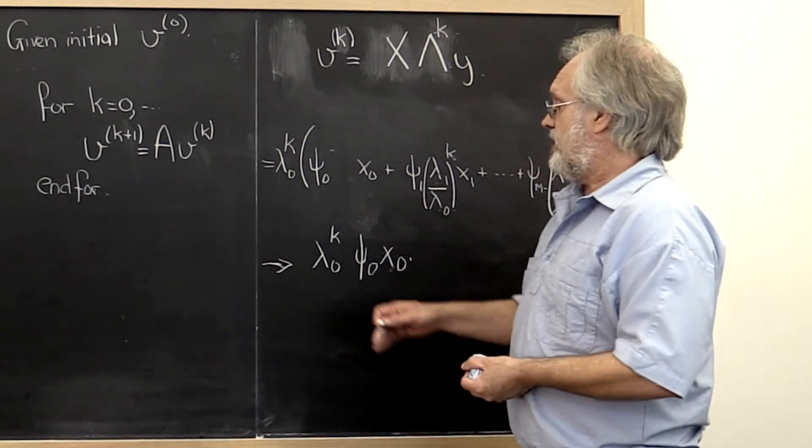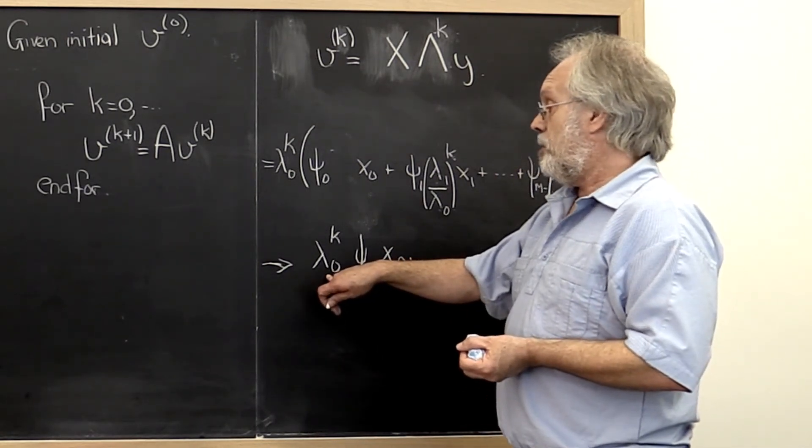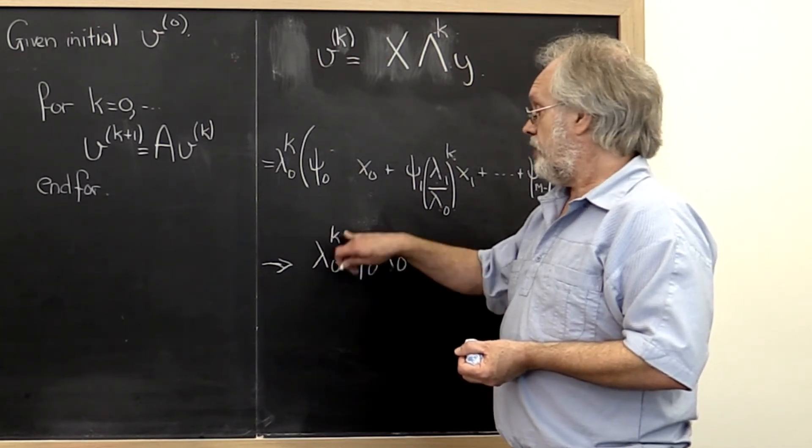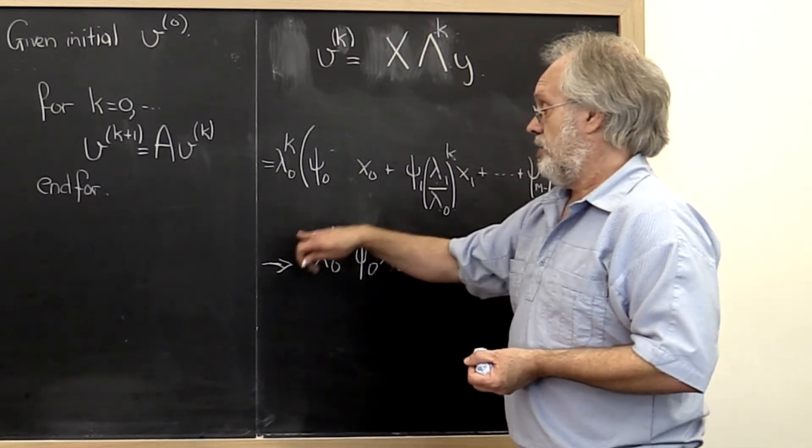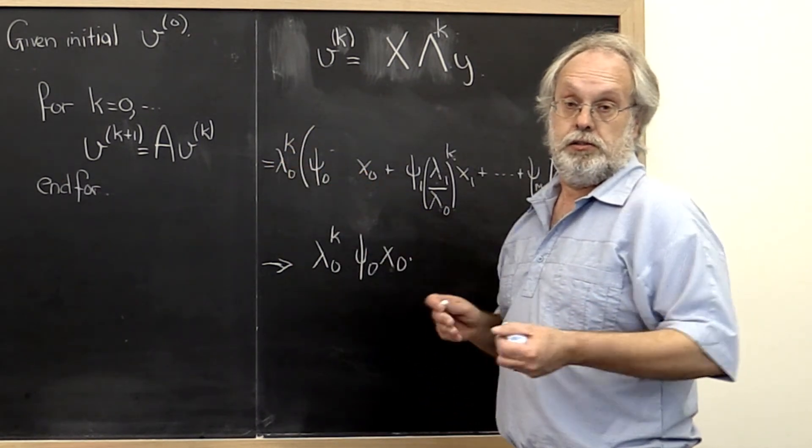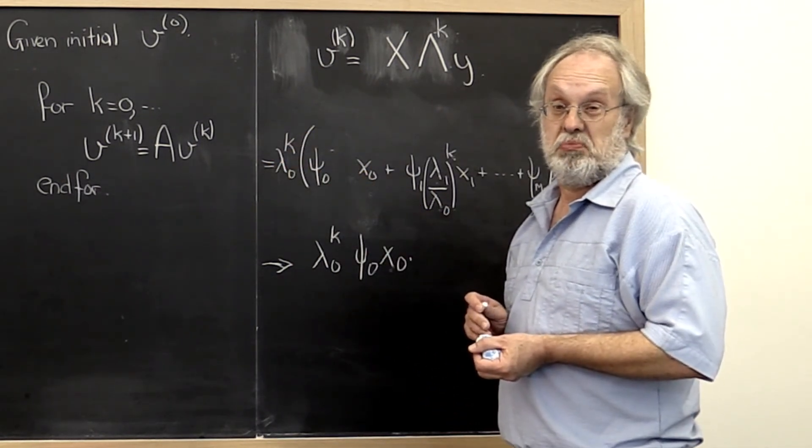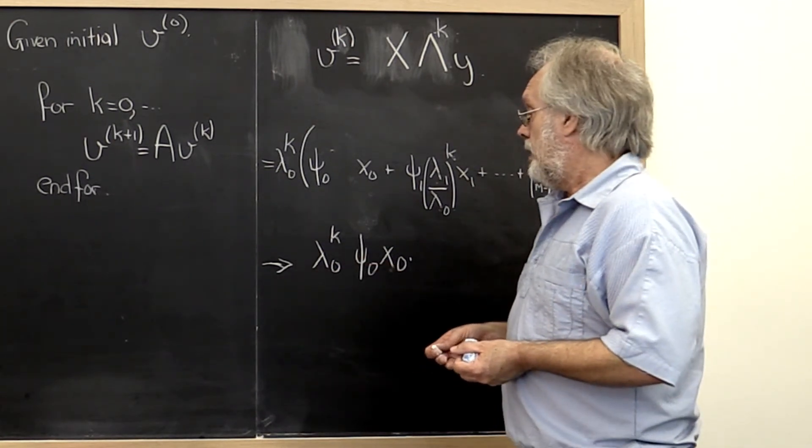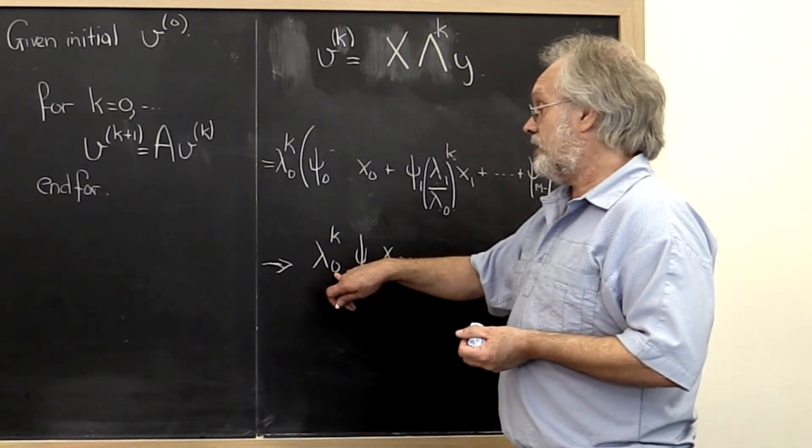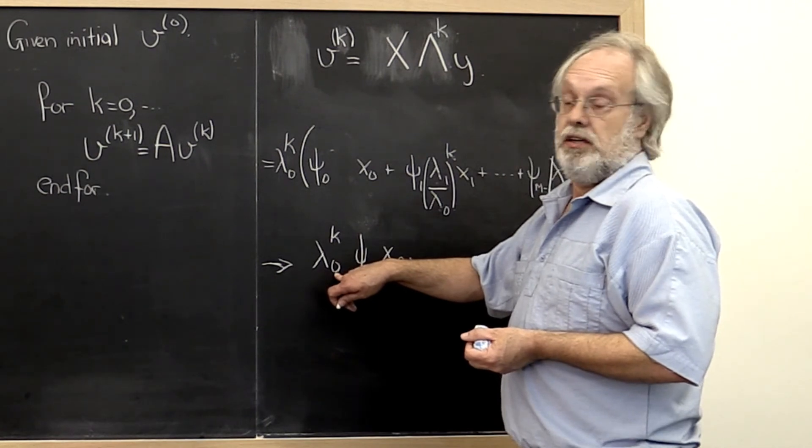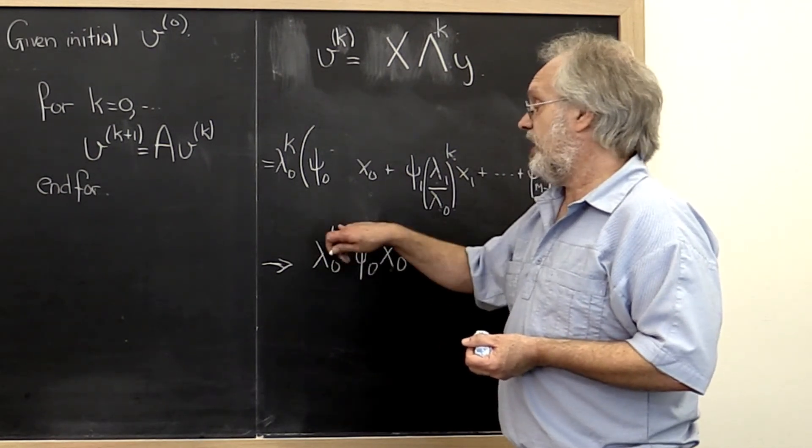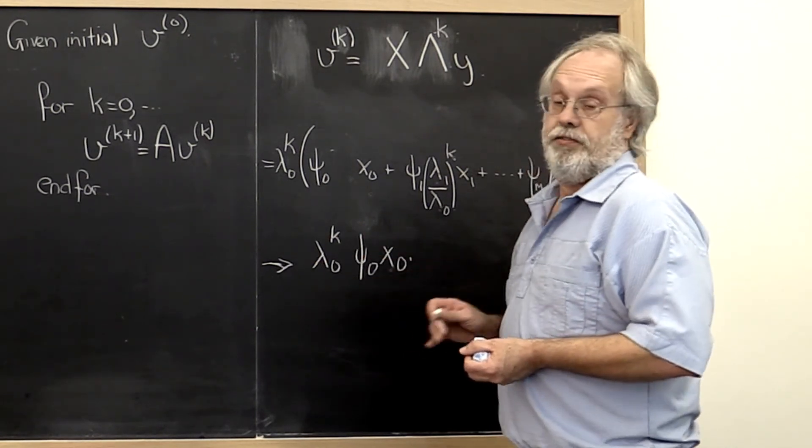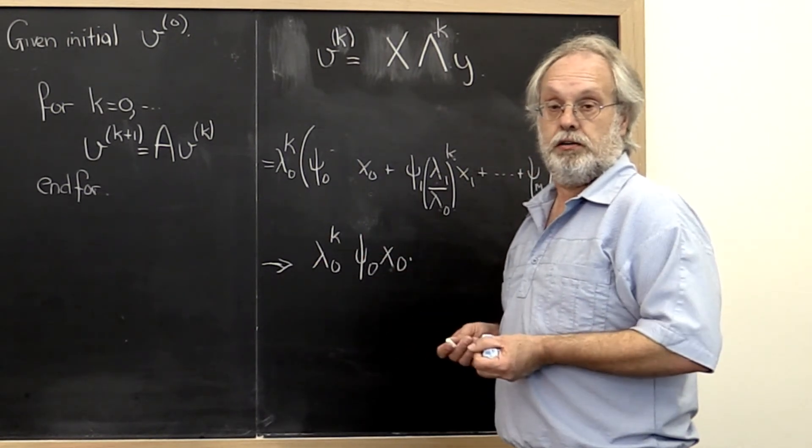Another concern is, if our lambda 0 in magnitude is greater than 1, then raising it to the kth power is eventually going to make this vector arbitrarily large. That's probably not a good thing. It probably would lead to overflow. And if lambda 0 in magnitude was less than 1, then eventually lambda 0 to the kth power in magnitude would become arbitrarily small. And therefore eventually our vector would underflow.